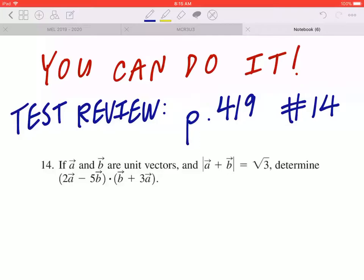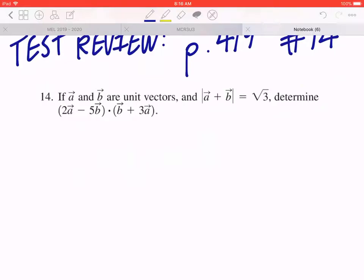If vector a and vector b are unit vectors and the magnitude of vector a plus vector b equals the square root of 3, determine (2a - 5b) · (b + 3a).